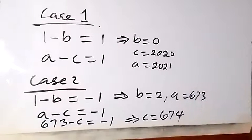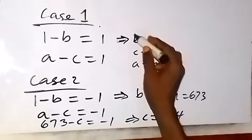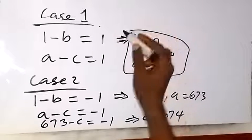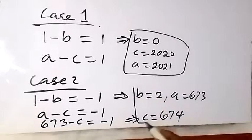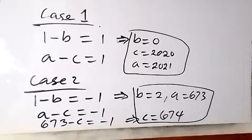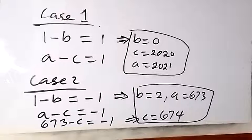So for case 1 we got A equals to 2021, B equals to 0, and C equals to 2020. For case 2 we got A equals to 673, B equals to 2, and C equals to 674. We have come to the end of this problem. Thank you for joining us — don't forget to subscribe to this channel for more of our videos. See you in the next class, bye for now.